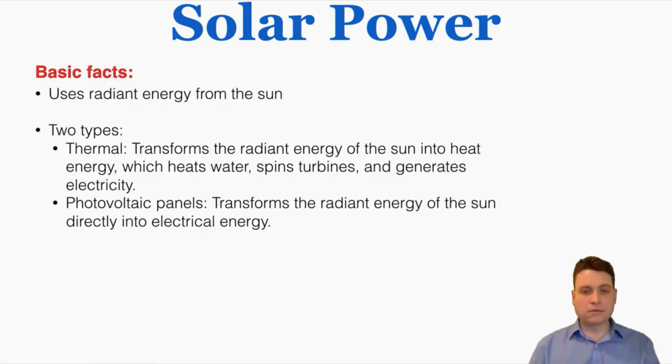These are the basic facts about solar power. It's pretty simple, it uses radiant energy from the sun to generate electricity, and there are two types of solar power.